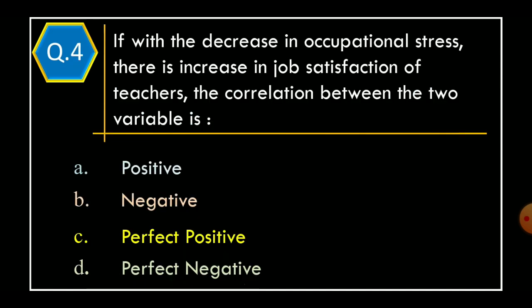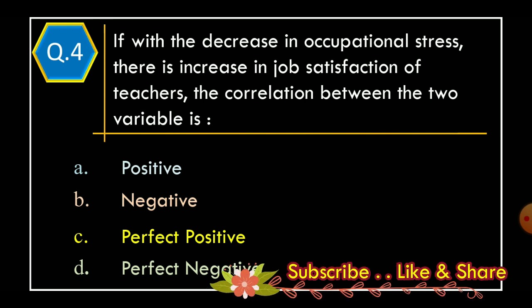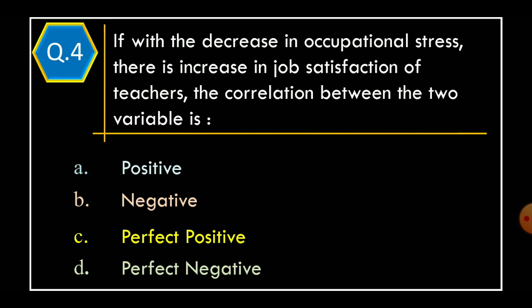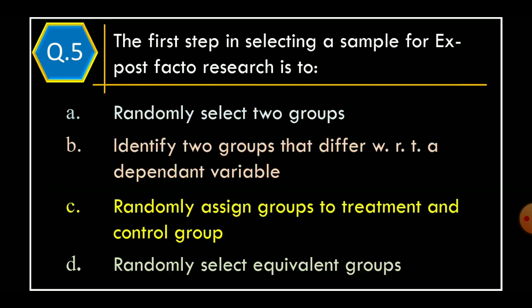Question 4. If with the decrease in occupational stress there is an increase in job satisfaction of teachers, the correlation between the two variables is: Option A: Positive. Option B: Negative. Option C: Perfect Positive. Option D: Perfect Negative. The correct option is Option B, Negative.